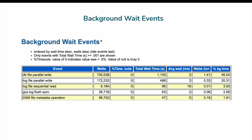Looking at the background wait events, DB file parallel write has consumed 46% of the time but the average wait is only 2 milliseconds, meaning there is no issue writing to data files — write operations are not impacted. The second event, log file parallel write, shows an average wait of only 3 milliseconds, indicating no problem writing to redo log files. The background wait events look perfectly fine.